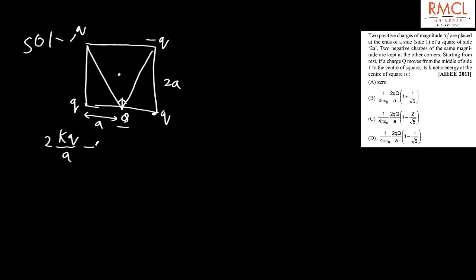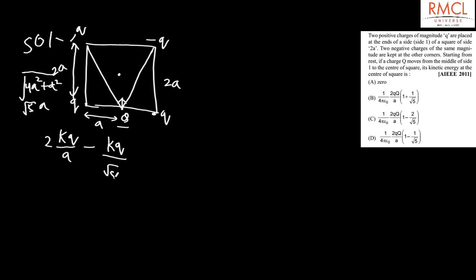The potential due to the negative charges is minus KQ divided by the distance from the midpoint of side 1 to each negative corner. Using the Pythagorean theorem, with one side equal to A and the other side equal to 2A, that distance is the square root of (4A² + A²), which equals root 5 times A. So the potential from both negative charges is minus KQ over (root 5 · A), multiplied by 2. Multiplying the total potential by charge Q gives the potential energy at the midpoint.